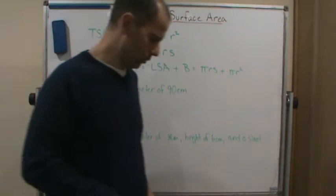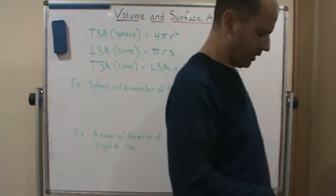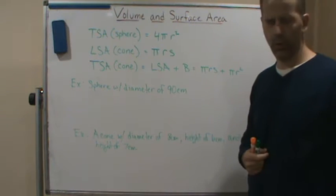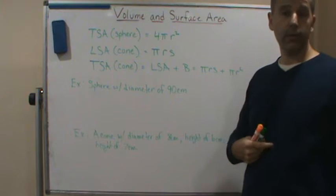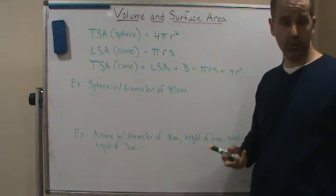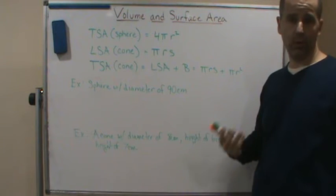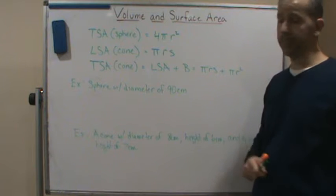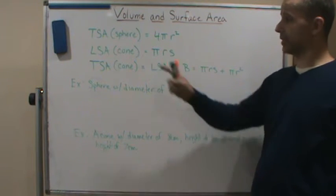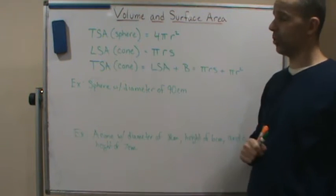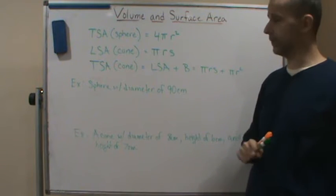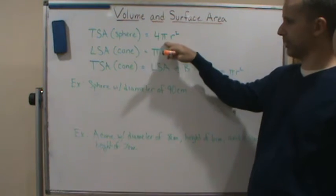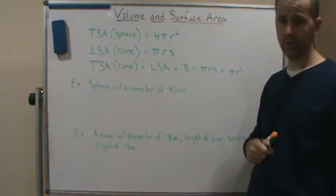Welcome back. Now we're going to introduce some other formulas for surface area — total surface area or lateral surface area. The first one is a sphere. The total surface area of a sphere is given by the formula four times pi r squared.